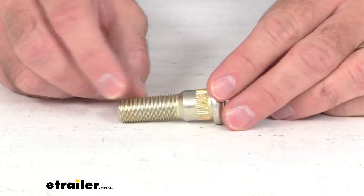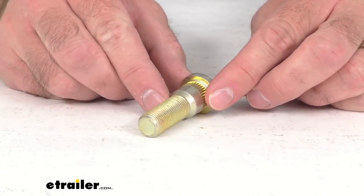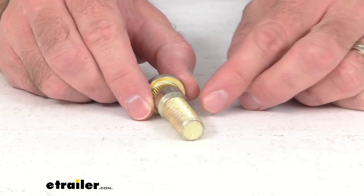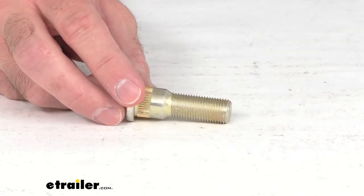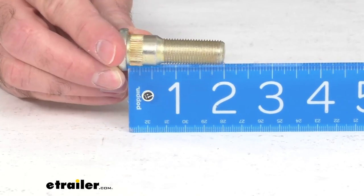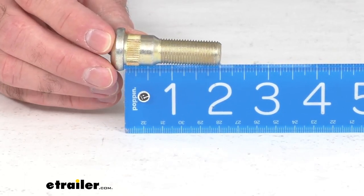This is going to replace one trailer hub drive-in wheel stud. This is nine-sixteenths of an inch in diameter, and retrieving my ruler here, you can see that it is two inches long.